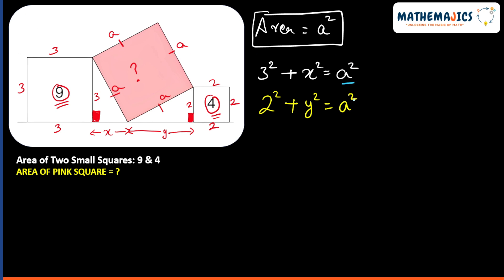Now to make the right side same, the left part should also be same. So how can this left part be same? This can happen under only one condition: when x is 2 and y is 3, then only these two equations will be equal.